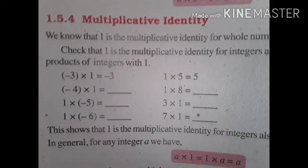We know that 1 is the multiplicative identity for whole numbers. Check that 1 is the multiplicative identity for integers as well. Observe the following products of integers with 1. Minus 3 into 1 is equal to minus 3. Minus 4 into 1 is equal to minus 4. 1 into minus 5 is equal to minus 5. 1 into minus 6 is equal to minus 6. 1 into 5 is equal to 5. 1 into 8 is equal to 8. 3 into 1 is equal to 3.